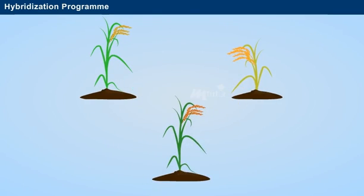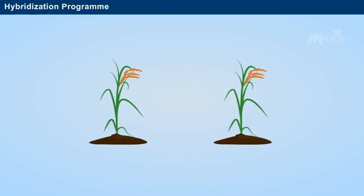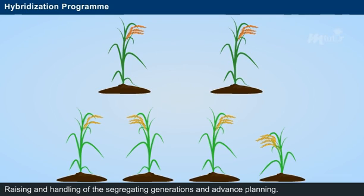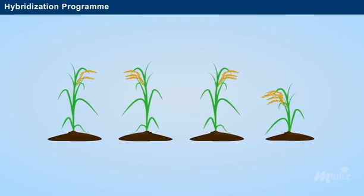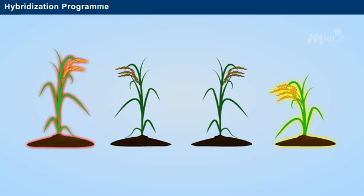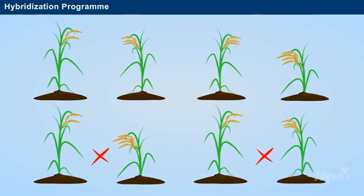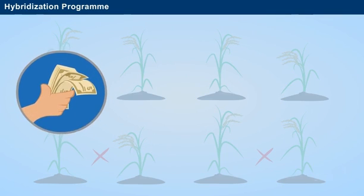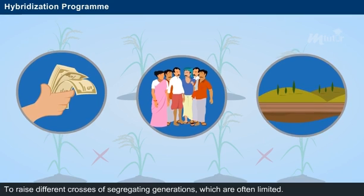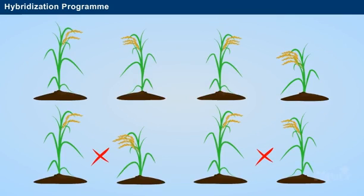Hybridization is an essential procedure for crop improvement. The program involved in crop improvement is known as the hybridization program, which includes raising and handling of the segregating generations and advanced planning. A hybrid variety obtained as a result of crossing F1 generation may or may not show hybrid vigor; in such cases, different crosses must be adopted to raise different generations, which requires more money, labor, land, and other facilities.